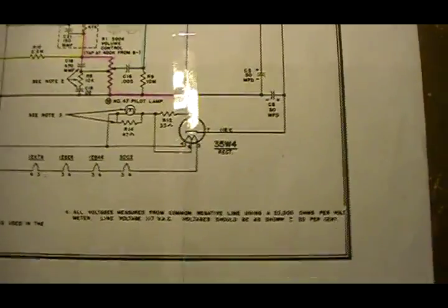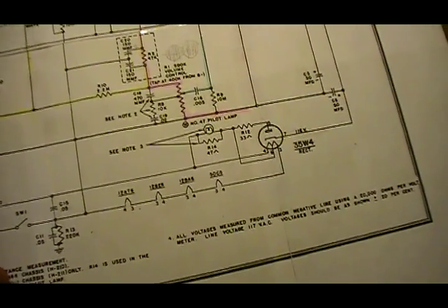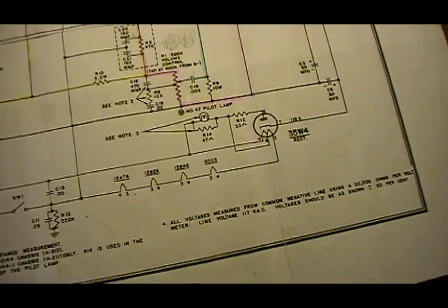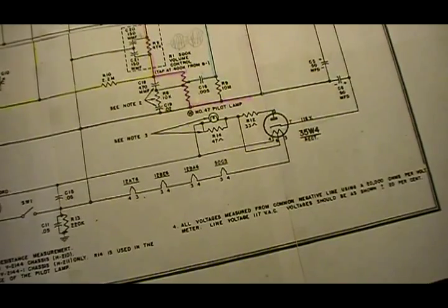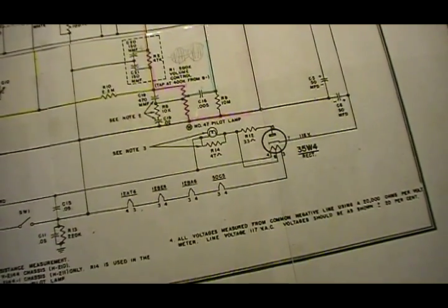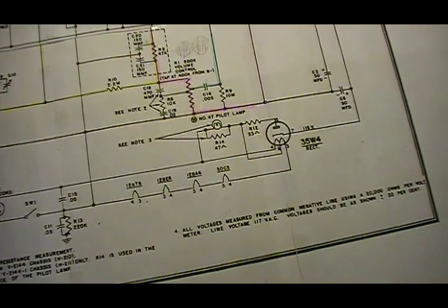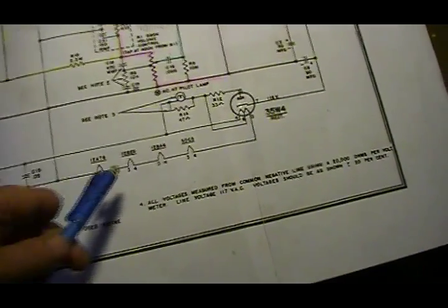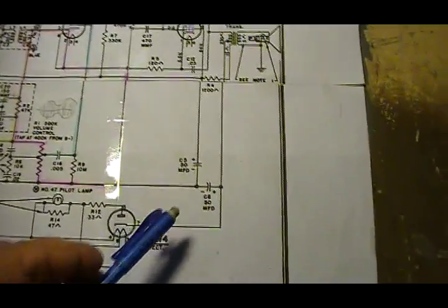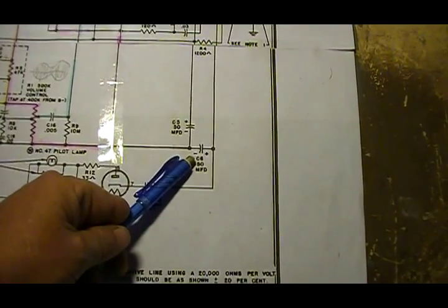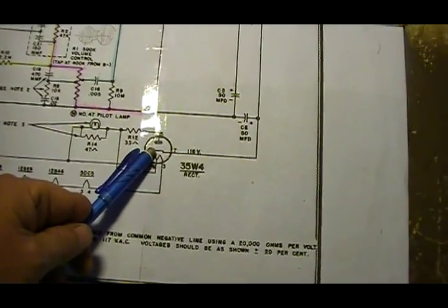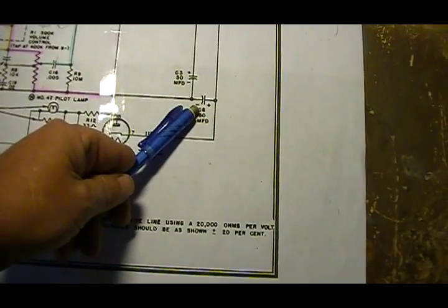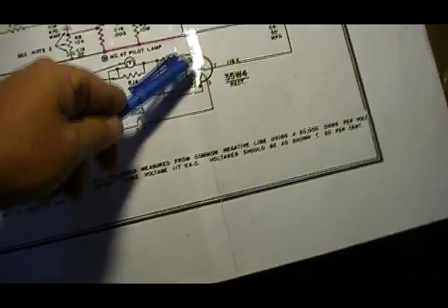The primary reason for that is, if you look up this tube or any rectifier tube in a tube manual, one thing they'll really seriously point out to you is information about that first filter cap and its maximum size. The reason is when this thing first turns on, this cap is going to demand to be charged. It's going to demand a lot of current. When this thing starts conducting, that capacitor wants to get charged up and it wants it now. The bigger the cap, the more current it draws. The more current then goes through the tube.